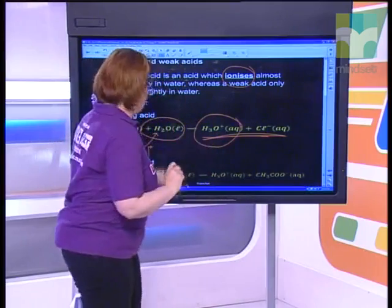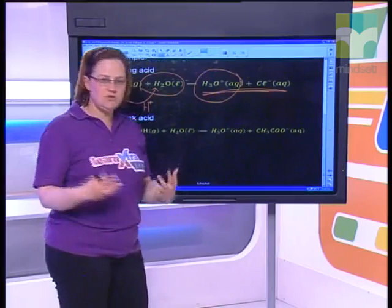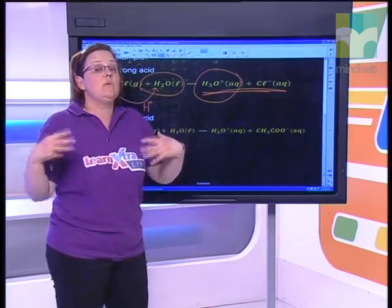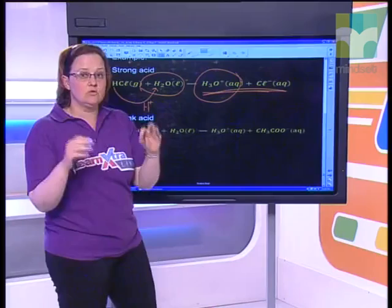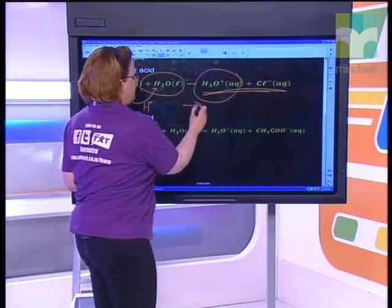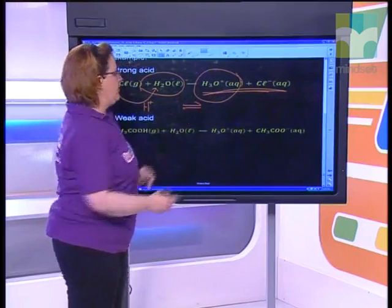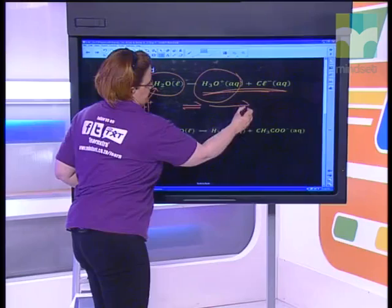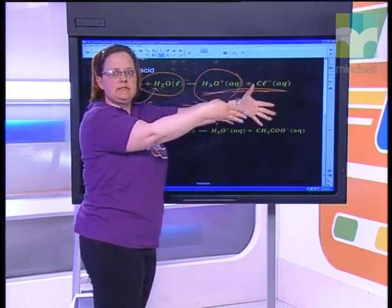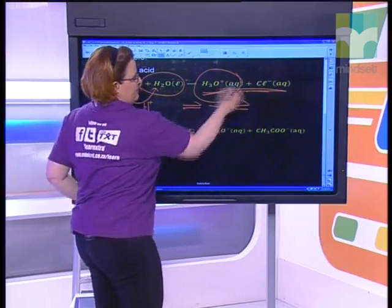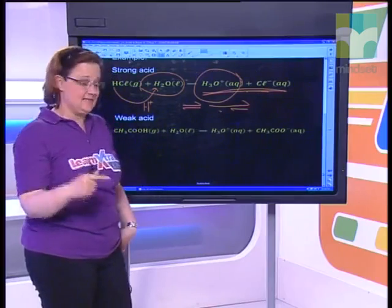Moving on to a weak acid — it's hard to see the difference from the equation at this level. When you get to grade 12 you'll study chemical equilibrium and reversible reactions, and we rewrite these equations with a larger arrow to the right and a smaller arrow to the left. That tells us there are relatively few ions present with a weak acid like acetic acid.